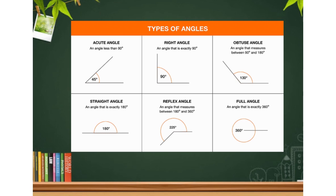A right angle is exactly 90 degrees. Between 90 and 180 degrees that is called an obtuse angle. A straight angle is when two line segments lie with each other — its measurement is 180 degrees. A reflex angle is when an angle measures between 180 and 360 degrees — more than 180 and less than 360 degrees.